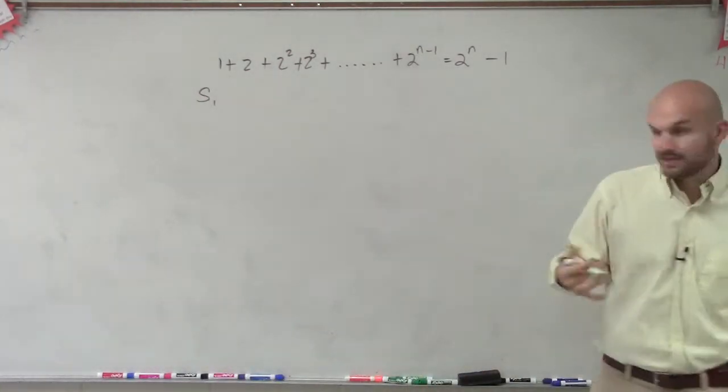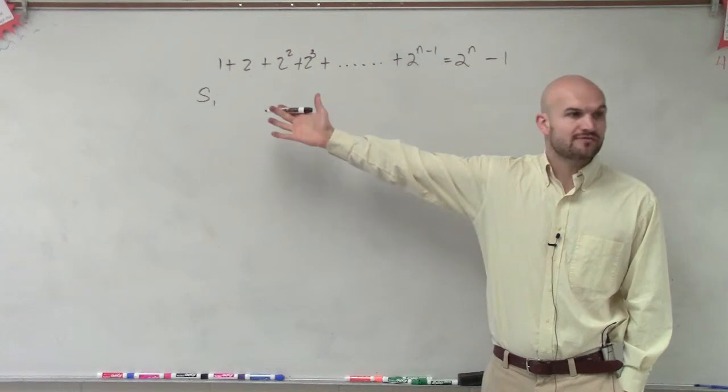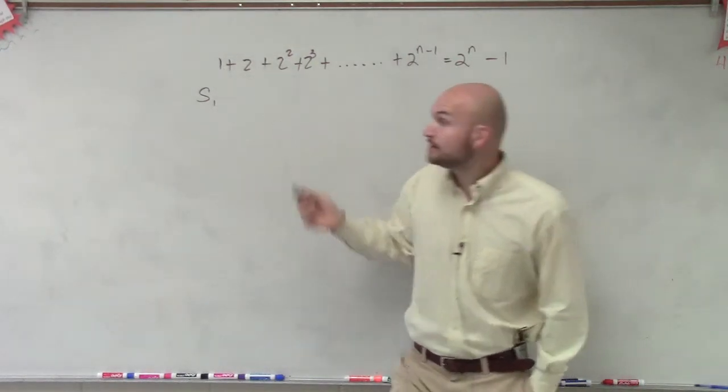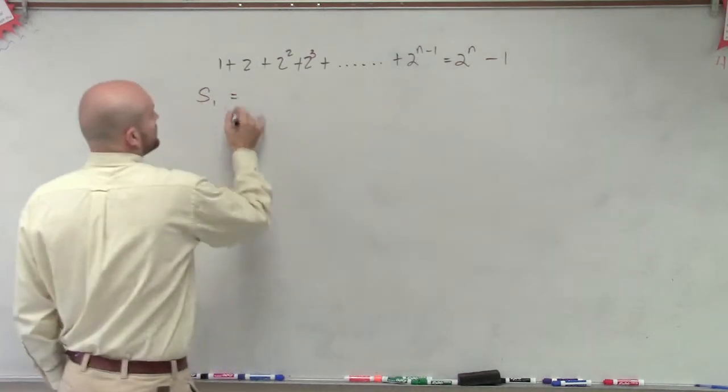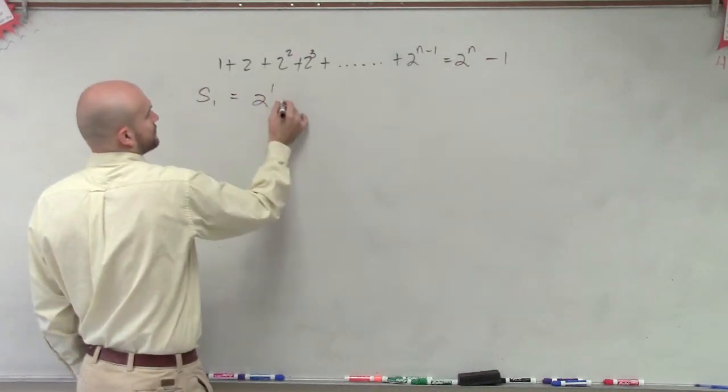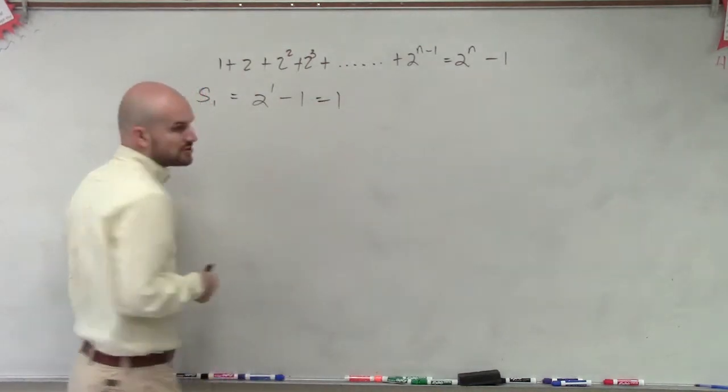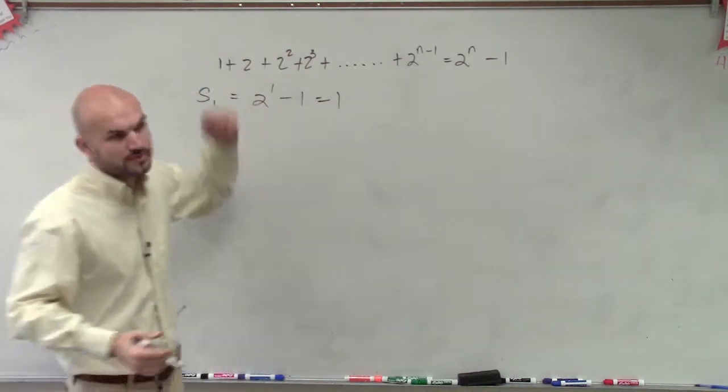So we say the sum of 1, and let's see, is that going to be the sum of our first term? Obviously, you can see the sum of the first term is just 1. So let's plug in 1 in for our sum. 2 to the 1 is 2 minus 1 is 1. So therefore, the sum of the first term is 1, which we know is correct.